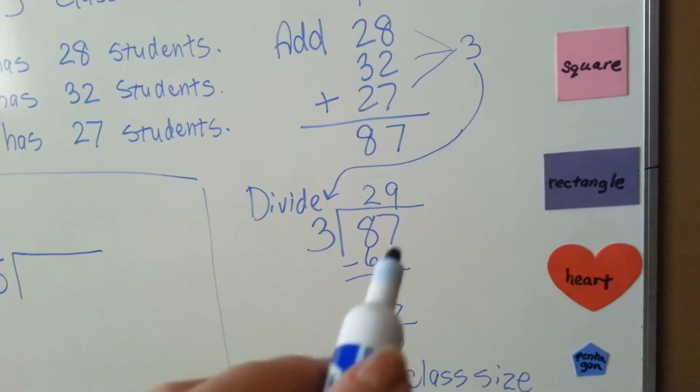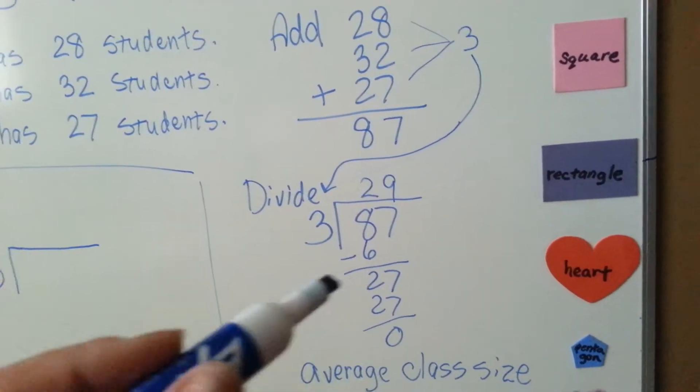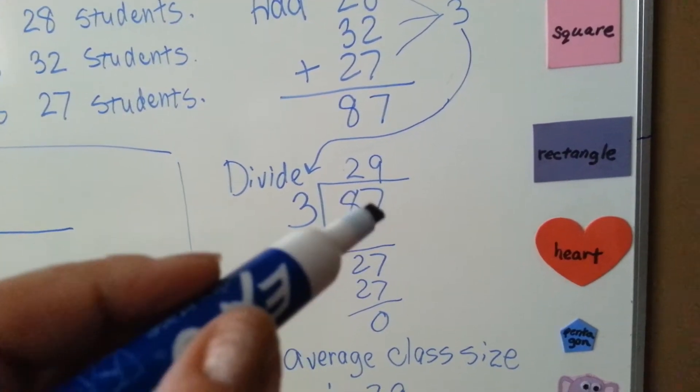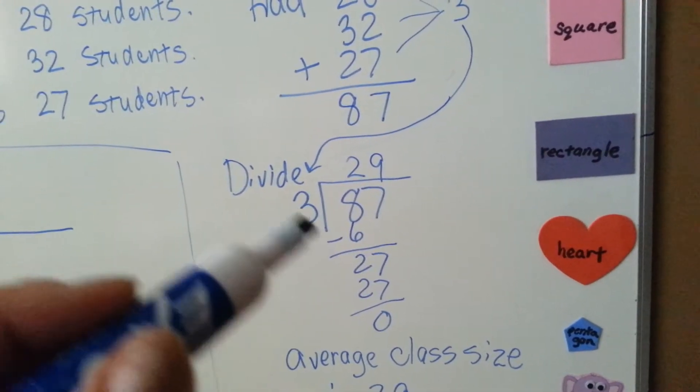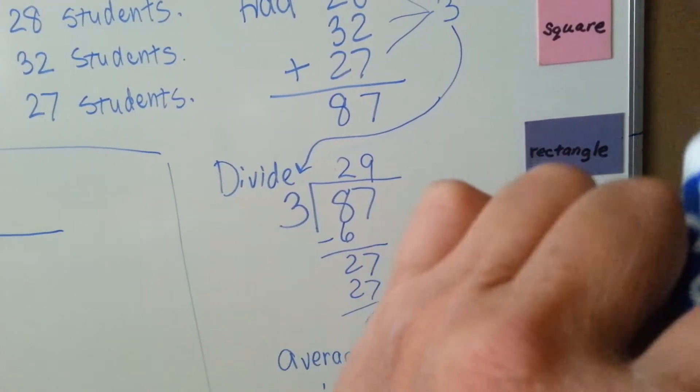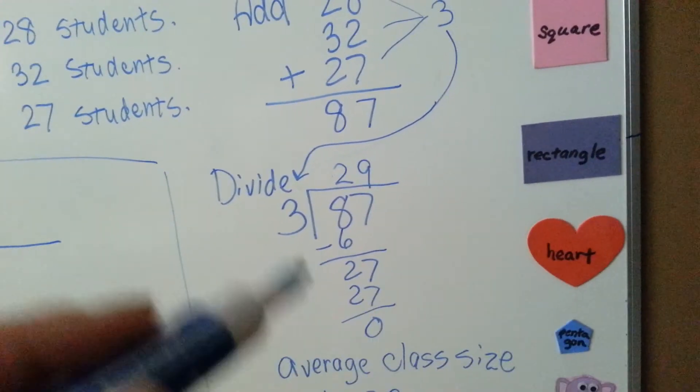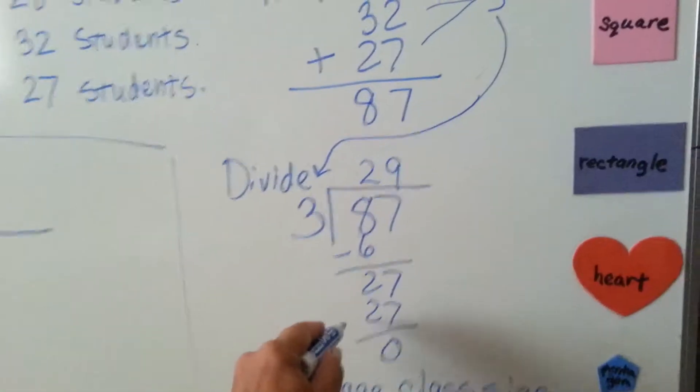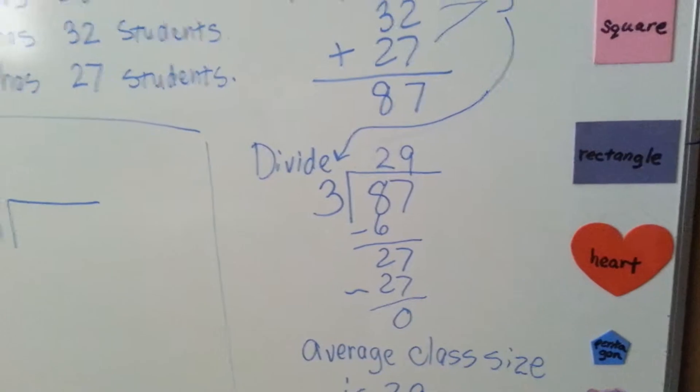We go right, then we go up, and then we go below. So now, 8 minus 6 is 2, and it's the 7's turn to come down because 3 cannot go into 2 alone. But it can go into 27. 3 goes into 27 nine times evenly, and when we do our subtraction, we get a remainder of 0.